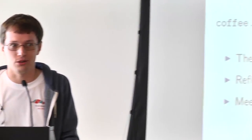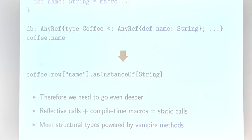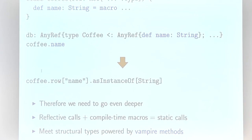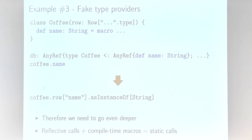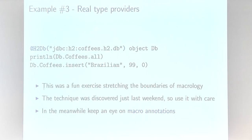We've lost autocomplete because we don't declare any fields at all. But this weekend we discovered that you can declare all generated fields as macros, and this 'macrosity' leaks into structural types — structural types remember whether a method is a macro. So coffee.name actually invokes the macro: no reflective penalty, and autocomplete is preserved. This is quite interesting, though since it relies on so many features in concert, I wouldn't recommend it in production just yet.